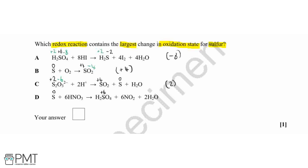Therefore, our change here is plus six. So we can see overall that the biggest change in oxidation state is going to be from equation A, where we had a change of minus eight. So our answer will be A.